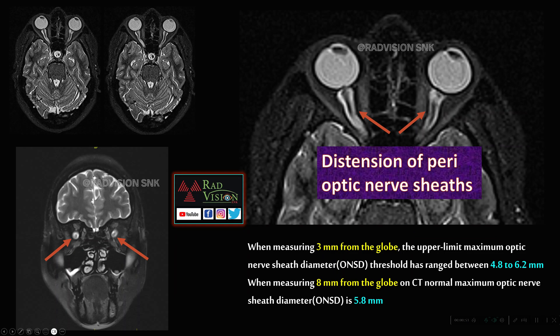We will try to see the imaging findings in this case. Here we can see distension of the perioptic nerve sheaths. The cutoff value to remember: when measuring 3 mm from the globe, the upper limit maximum optic nerve sheath diameter (ONSD) threshold has ranged between 4.8 to 6.2 mm. Anything more than this is definitely abnormal. When measuring 8 mm from the globe on CT, the maximum optic nerve sheath diameter is 5.8 mm. In coronal sections it is typically seen as a CSF ring around the optic nerves. Distension of the perioptic nerve sheaths is an important imaging finding in IIH.